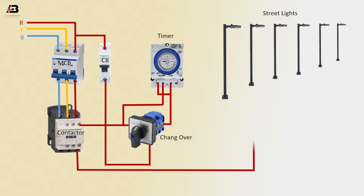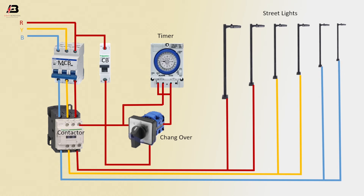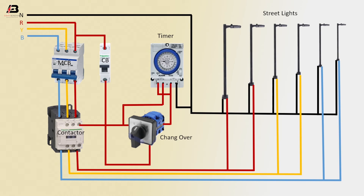Phase connection to street light from contactor. Another phase connection from contactor to street light. Again another phase connection from contactor to street light. Neutral connection to all street lights. Neutral connection to timer. Neutral connection to magnetic contactor coil.